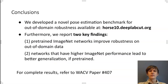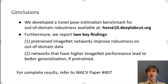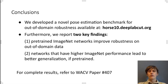In conclusion, we developed novel pose estimation benchmarks, Horse 10 and Horse C, available at horse10.deeplabcut.org. Horse 10 can also be found on paperswithcode.com. We report two key findings across all of our datasets: pre-trained ImageNet networks are crucial for out-of-domain robustness, and networks that have higher ImageNet performance lead to better generalization — but this is only true if you pre-train your networks. For our complete results, please refer to WACV paper number 407. Thank you for listening and have a great day.